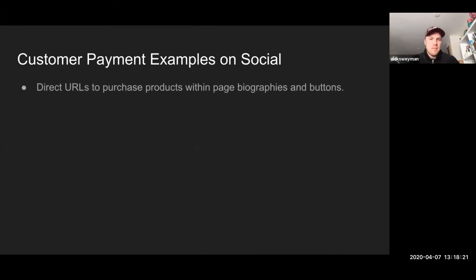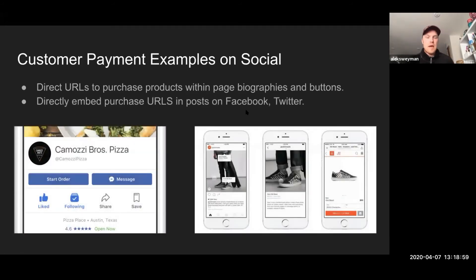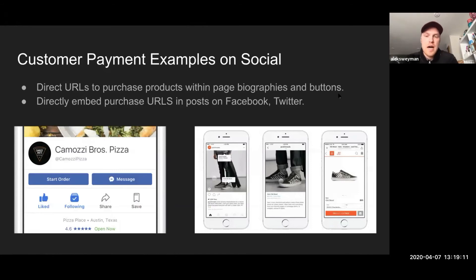I want to talk about how to set up payments on social — how to request payments from customers. Going off these three collectibles: trust, information, and payment. If you have their trust and some information from customers, they're going to be much more inclined to pay for your services, because they've already trusted you and given you their information for some sort of free trial. Now they're more inclined to pay versus somebody who may just come across your website for the first time. There are two main ways to direct payments on social.